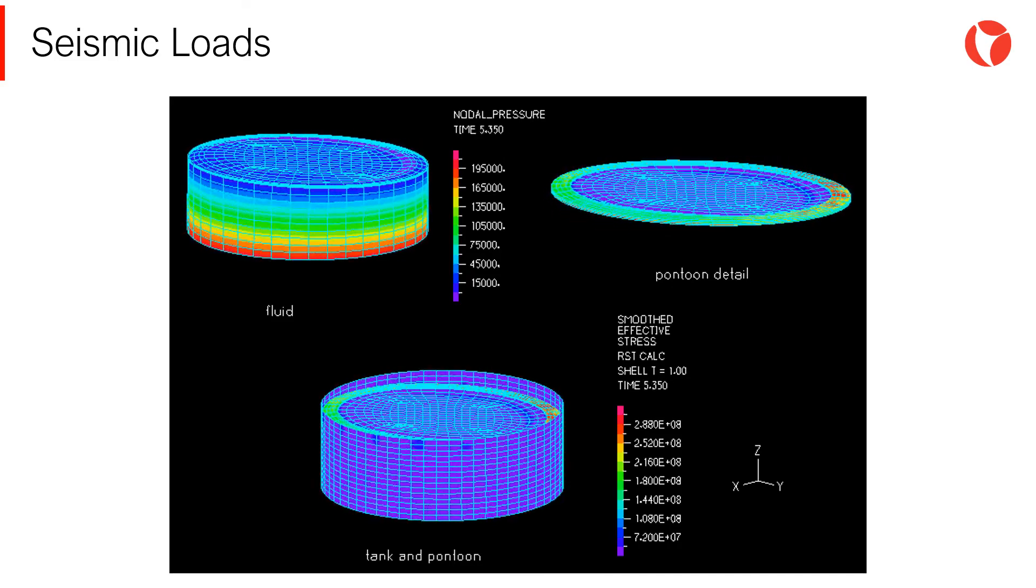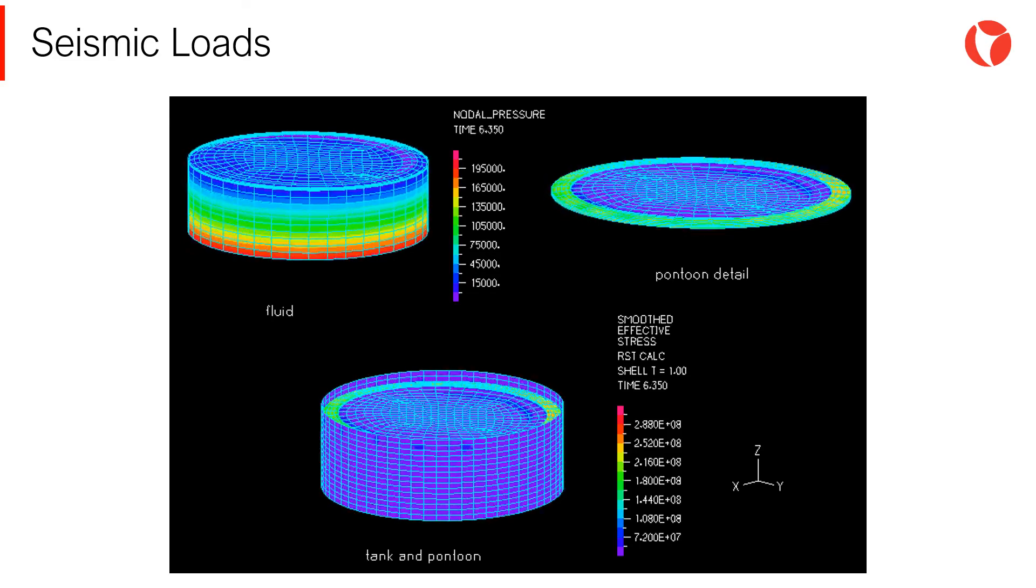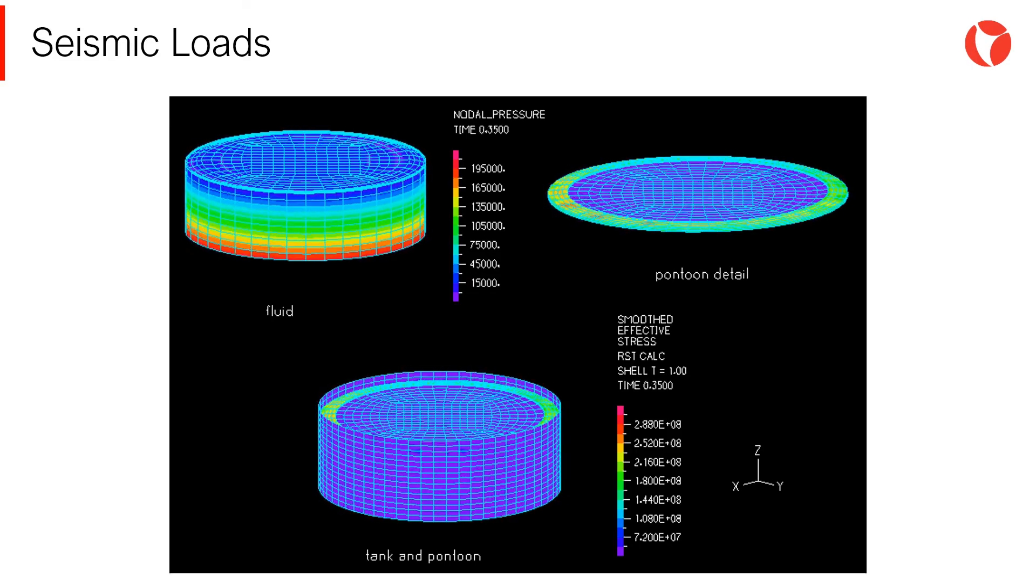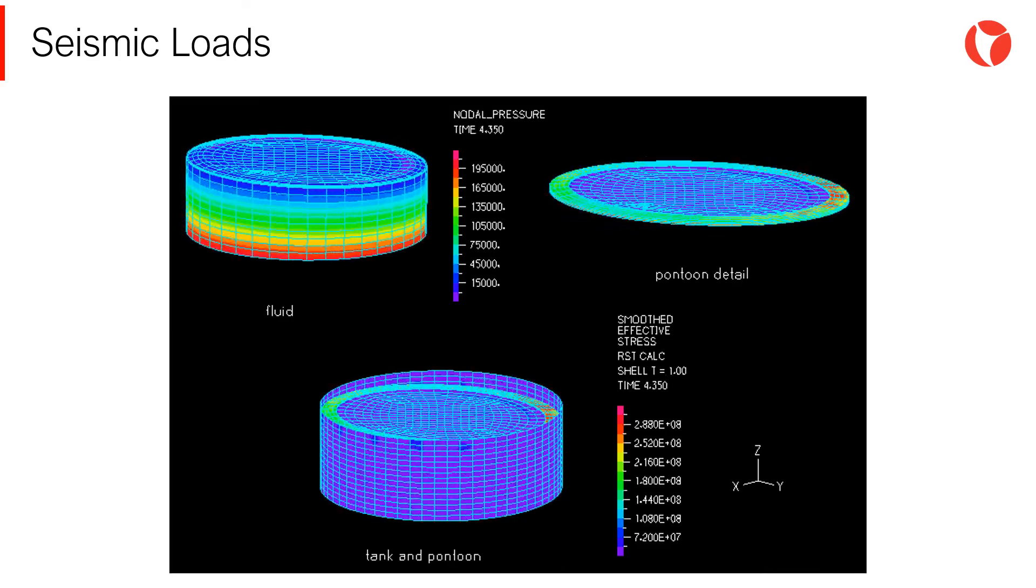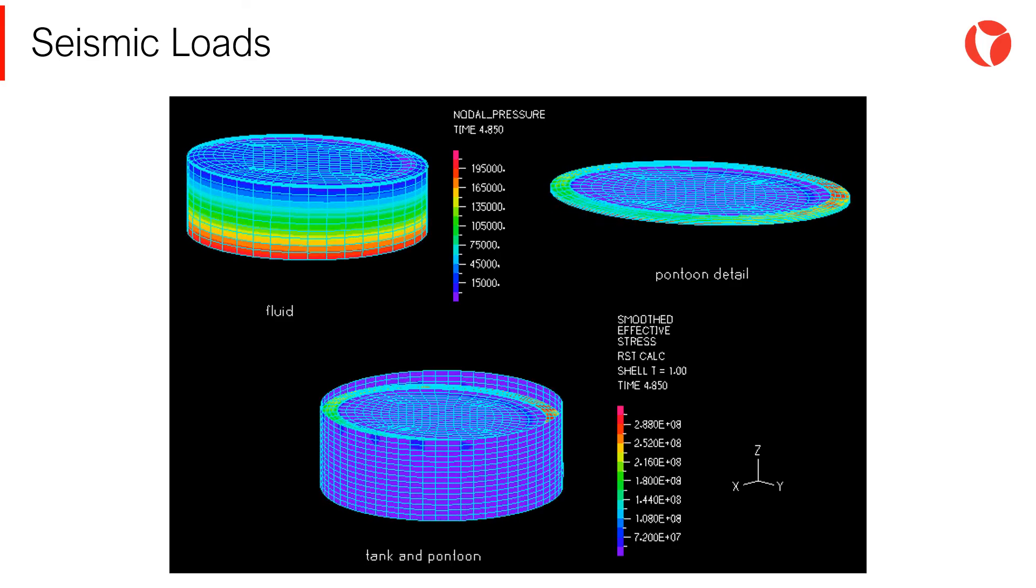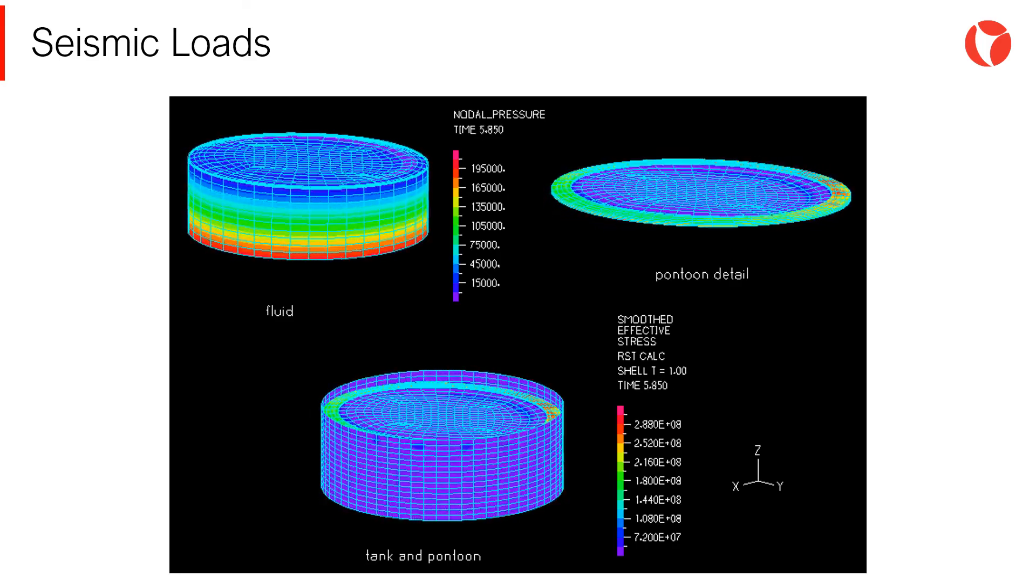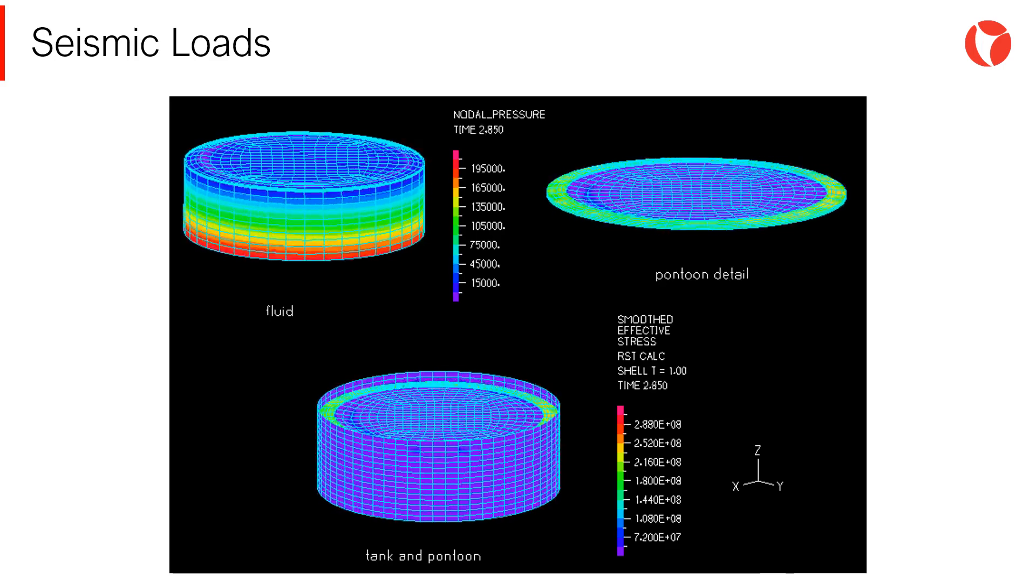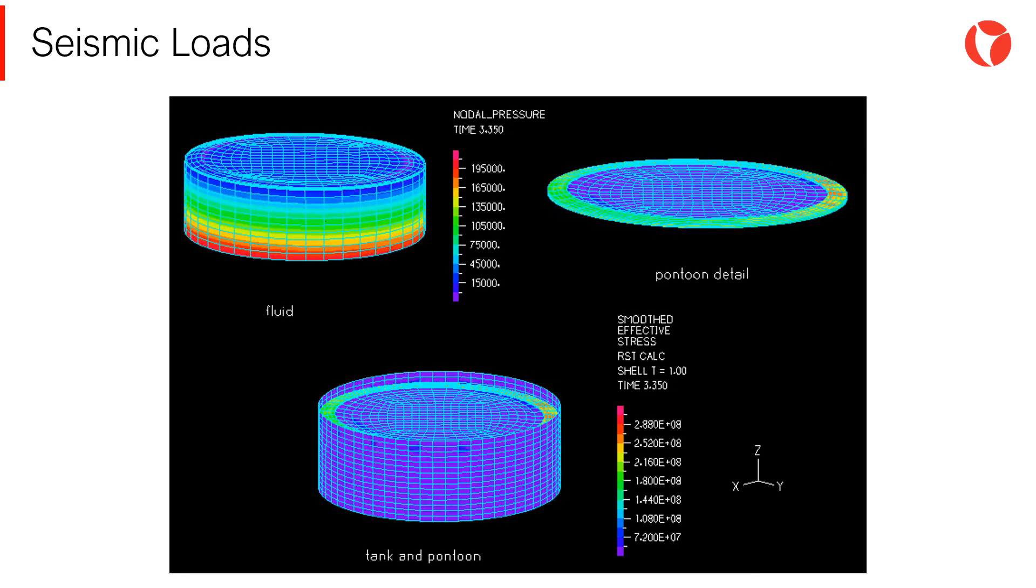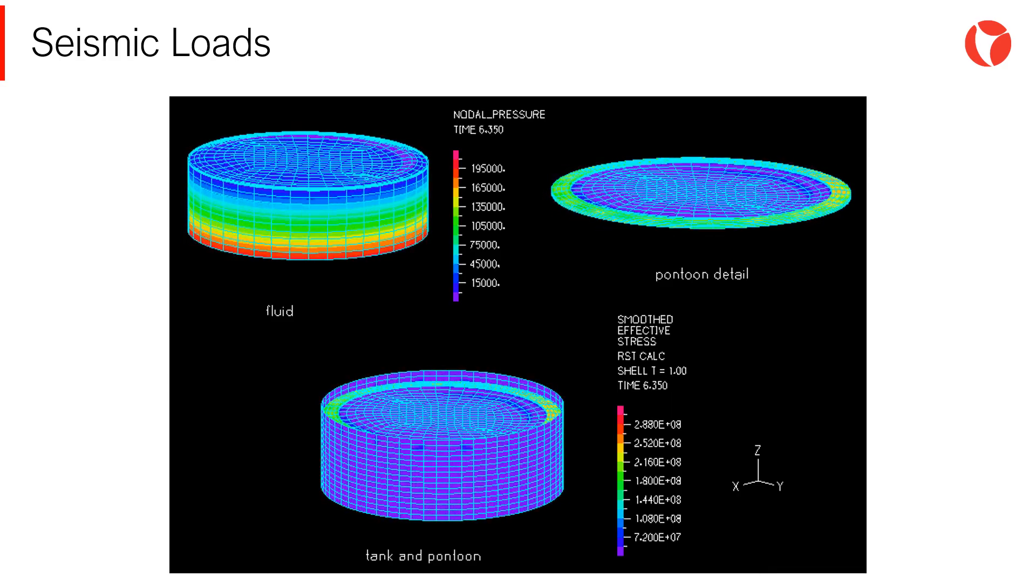When seismic actions occur, one of the effects suffered by the store product is the wave phenomenon, known as sloshing. To prevent the liquid from spilling, and in the case of tanks with floating roofs, so that the roof does not leave the tank, the height of the freeboard must be determined. The freeboard reaches a certain height above the operation level and depends on the convective portion of the fluid.